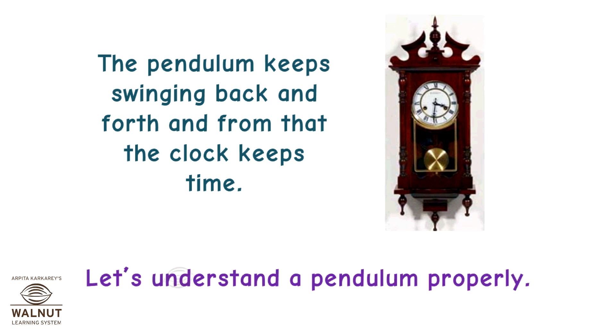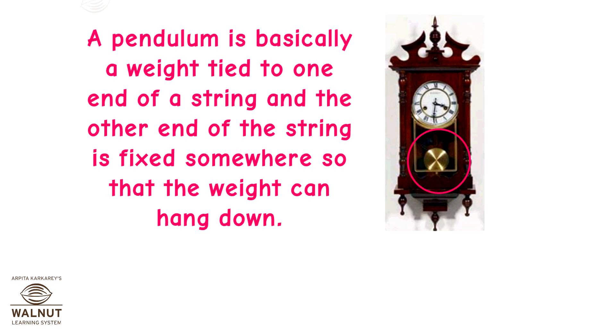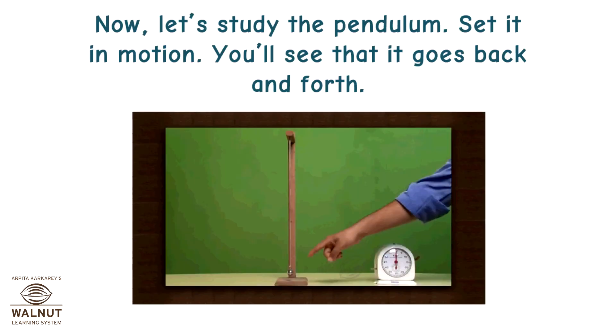Let's understand a pendulum properly. A pendulum is basically a weight tied to one end of a string and the other end of the string is fixed somewhere so that the weight can hang down. That's all there is. Now let's study the pendulum. Set it in motion. You will see that it goes back and forth.